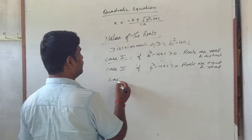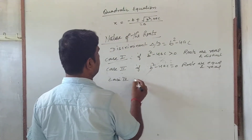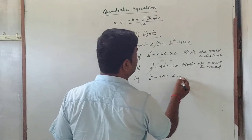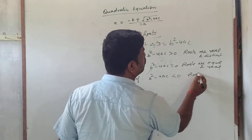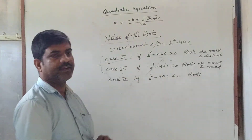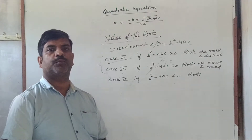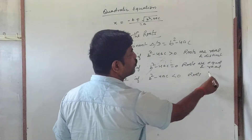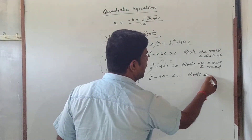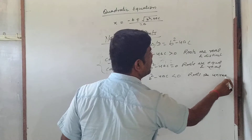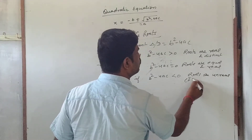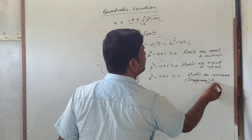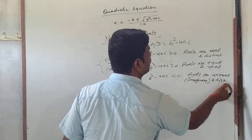Case 3: If b² - 4ac is less than zero, then the roots are not real — they are unreal or imaginary, and they are distinct and unequal. So only when b² - 4ac is greater than or equal to zero are the roots real.